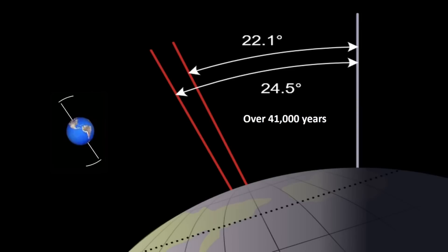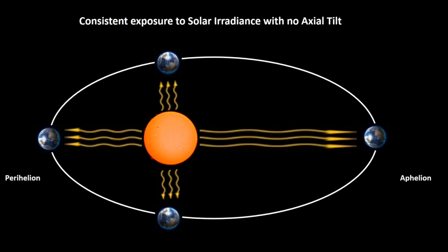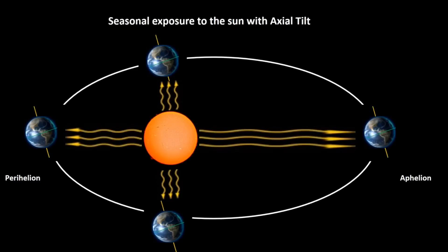In the first instance, obliquity explains how we have seasons and why currently the Northern Hemisphere experiences summer when it is furthest from the Sun. If the tilt did not exist, then each location on the Earth would experience an almost consistent amount of solar irradiance throughout the annual cycle — there would be a slightly increased solar irradiance when the Earth approached the perihelion, but this would not amount to anything like the seasonal change we currently experience. Because of obliquity, the Northern and Southern Hemispheres experience varying amounts of solar irradiance as the Earth goes through its orbit.